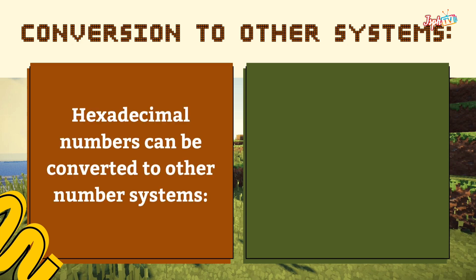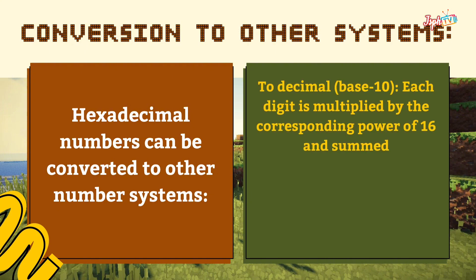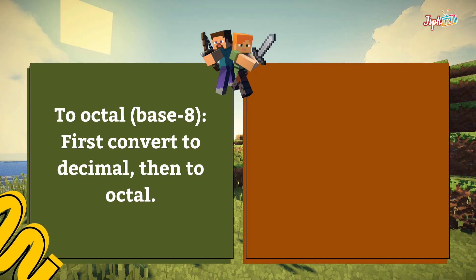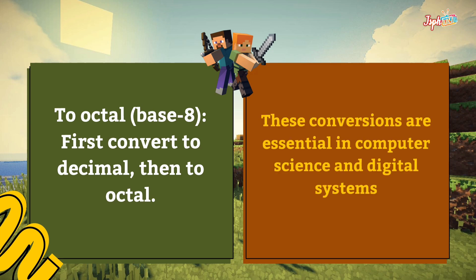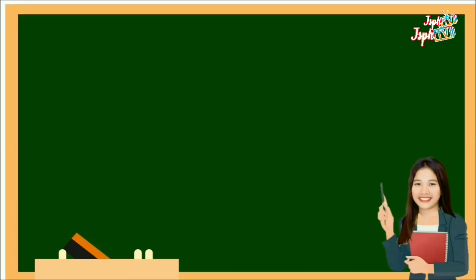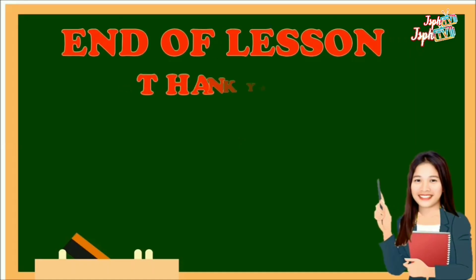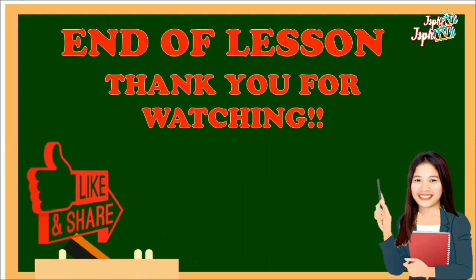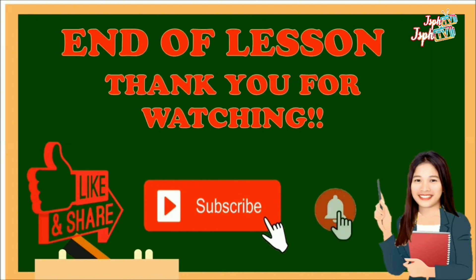Conversion to other systems: hexadecimal numbers can be converted to other number systems. To decimal (base 10), each digit is multiplied by the corresponding power of 16 and summed. To binary, each hexadecimal digit corresponds to a 4-bit binary representation. To octal, first convert to decimal, then to octal. These conversions are essential. That's the end of our lesson for today. Thank you for watching — don't forget to like, share, subscribe, and hit the bell button.